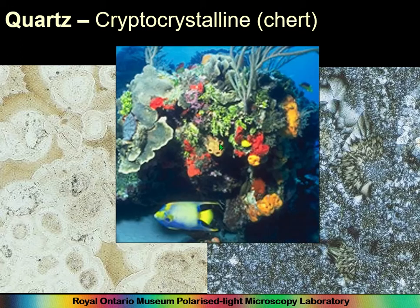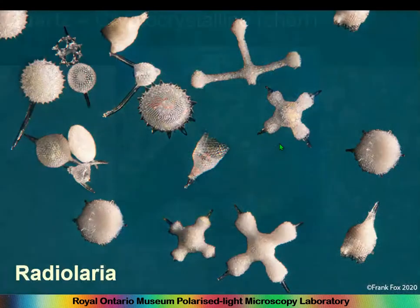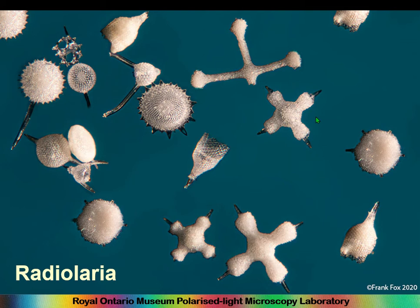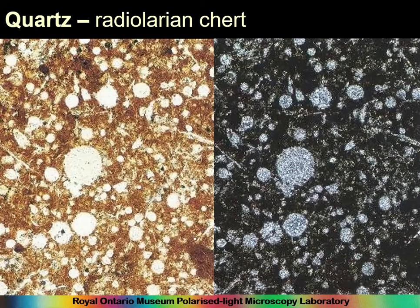Chert also forms from radiolaria — microscopic life forms with siliceous skeletons that lived in the open sea and were deposited at the sea bottom, creating chert beds. Sometimes we find radiolarian chert, which is so filled with radiolaria fossils it's given that name. Sometimes you might find this material and wonder what you're looking at; you only recognise it because there's a radiolaria in it.